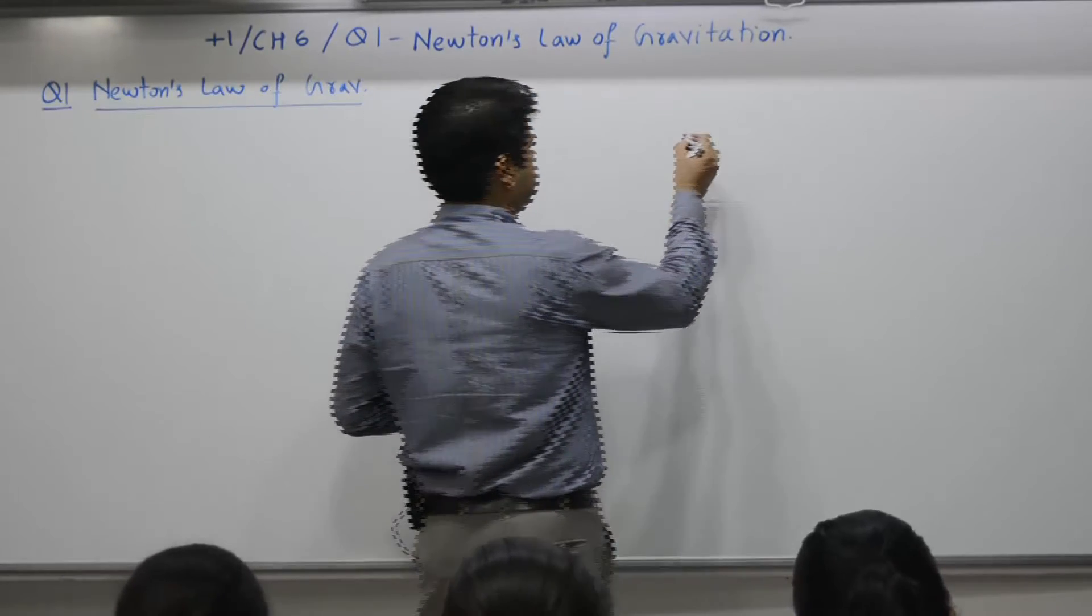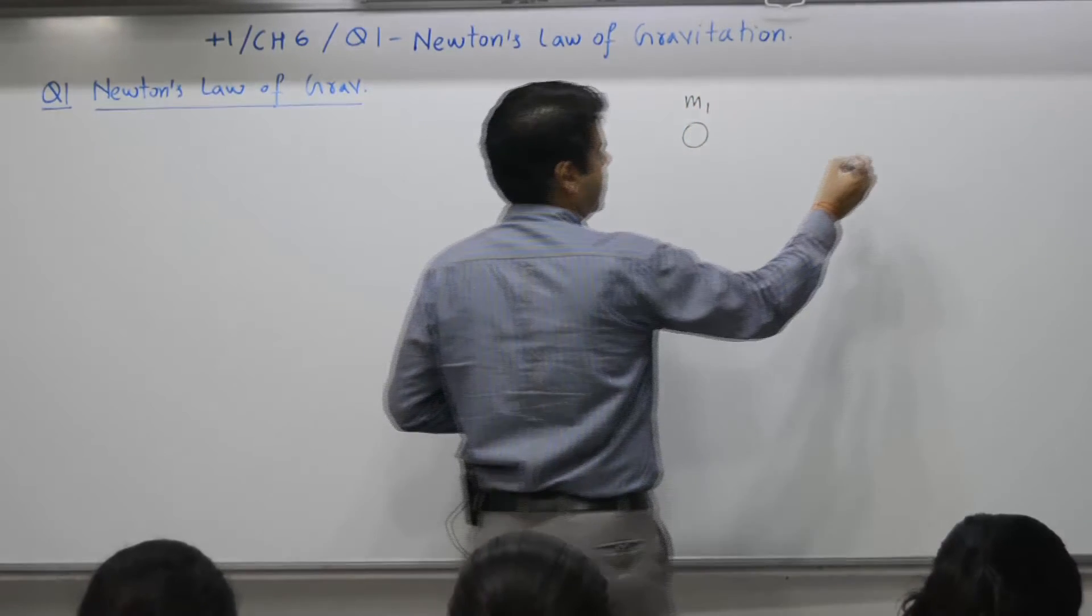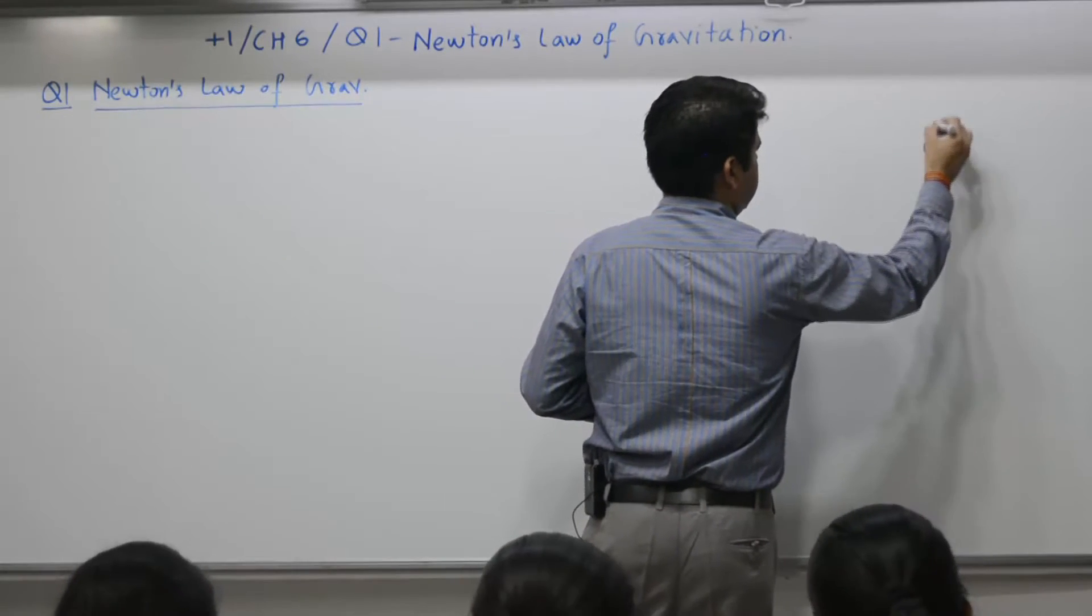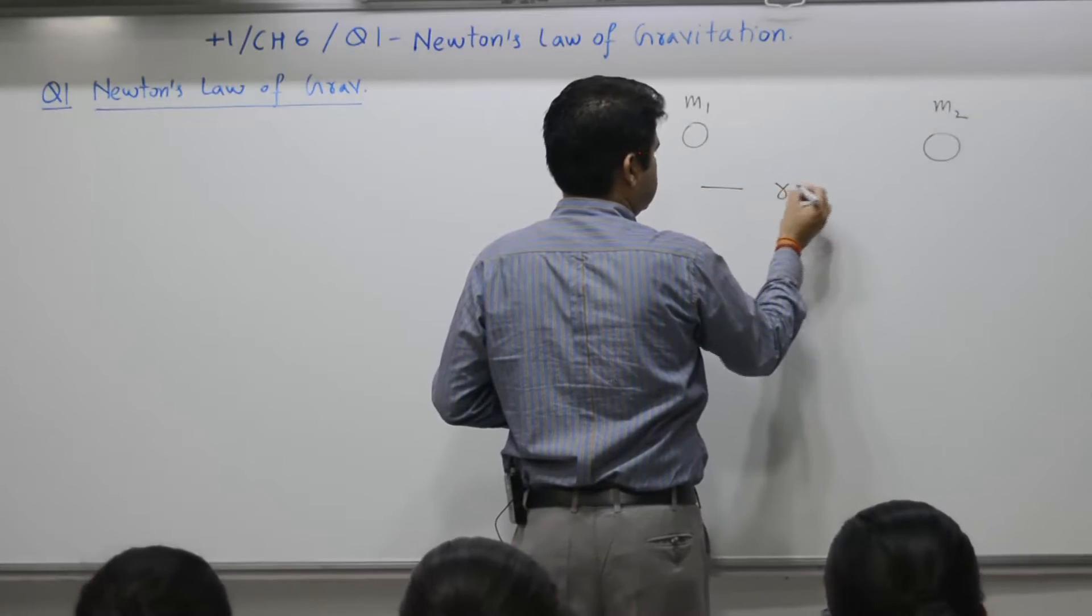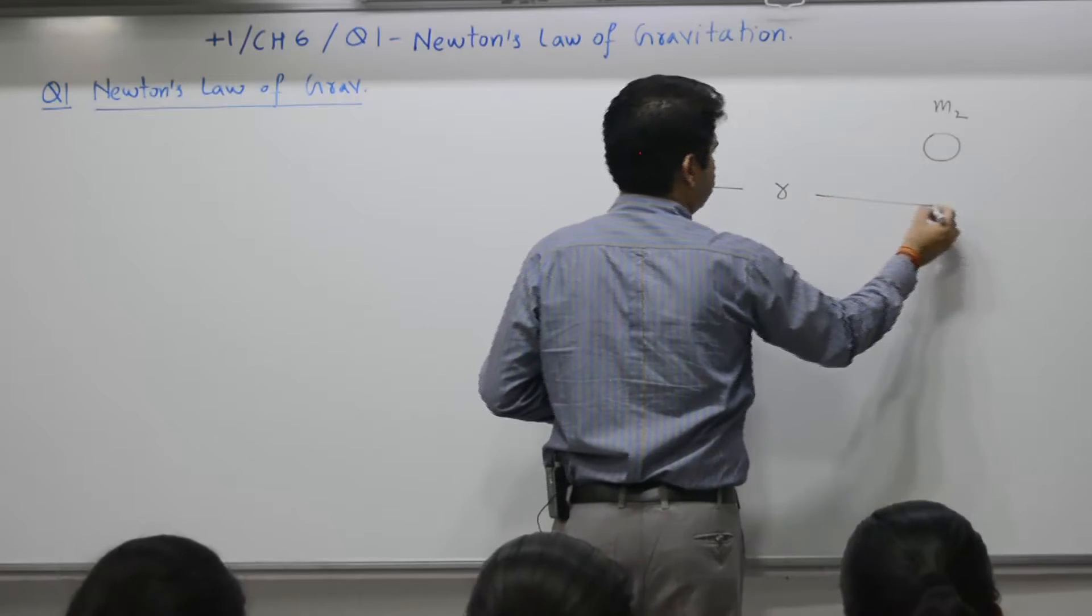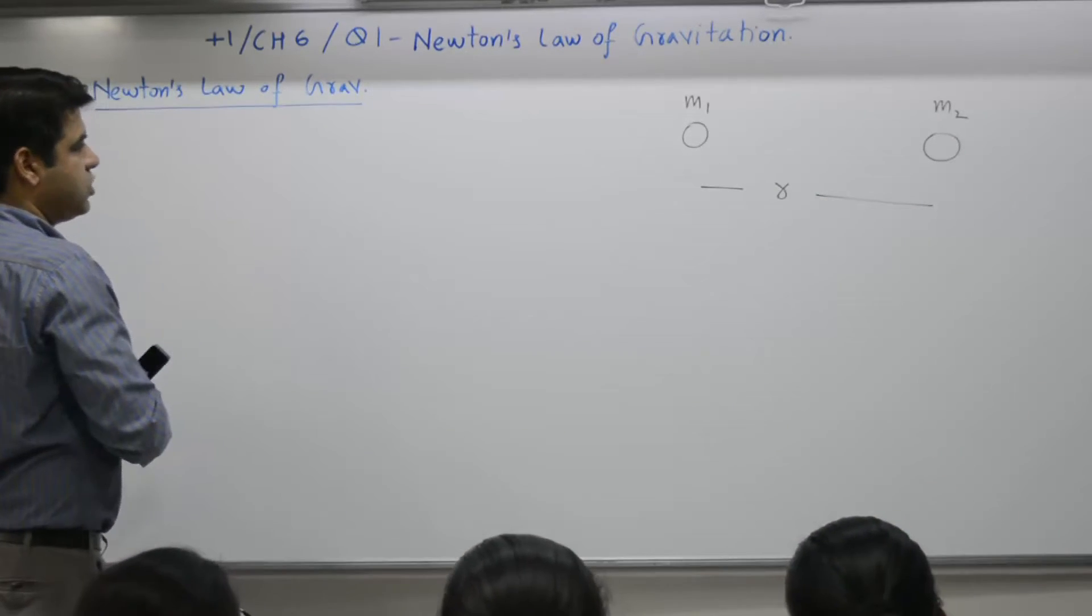If there are two objects, object 1 with mass m1, another object m2, and the distance between the two is r.